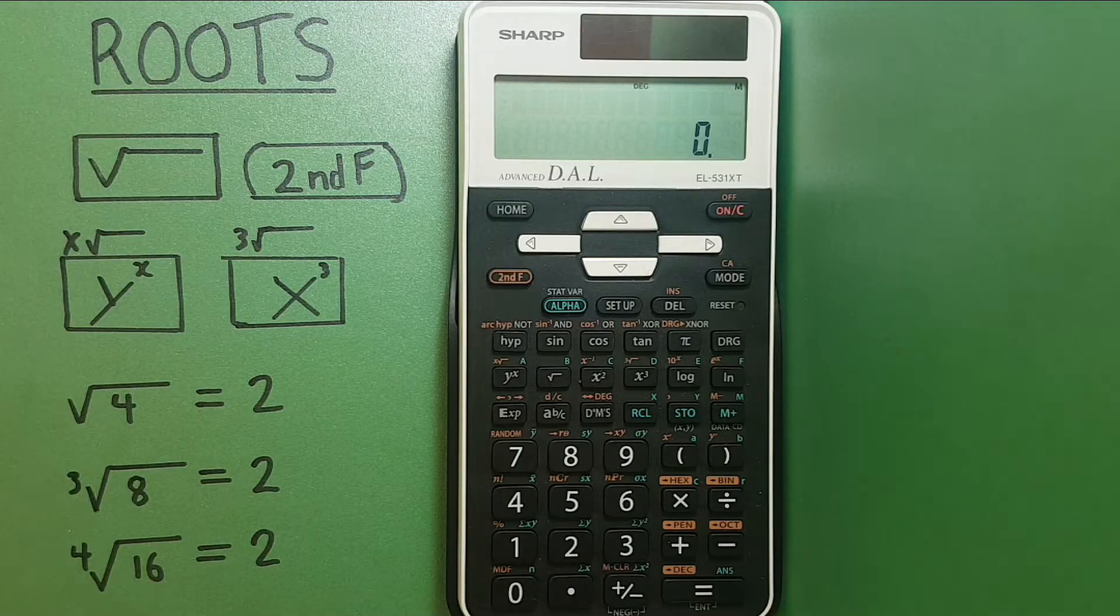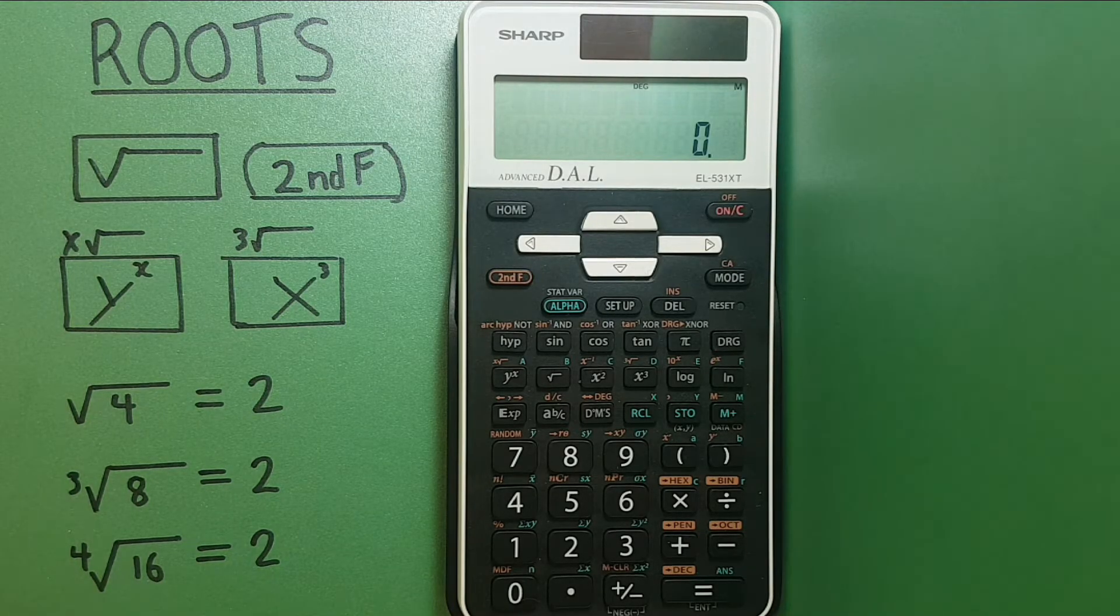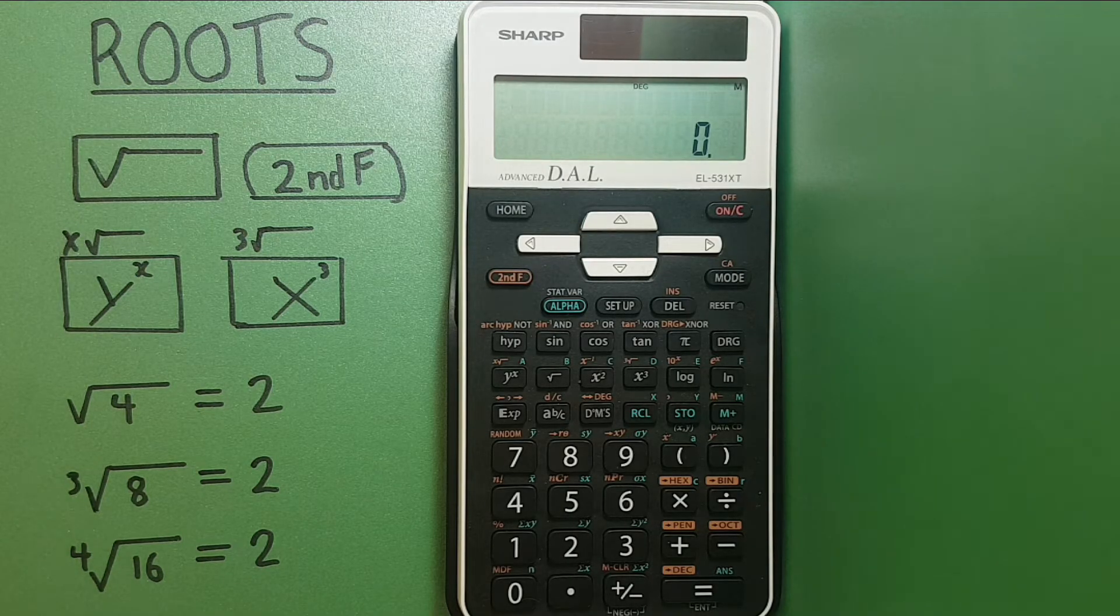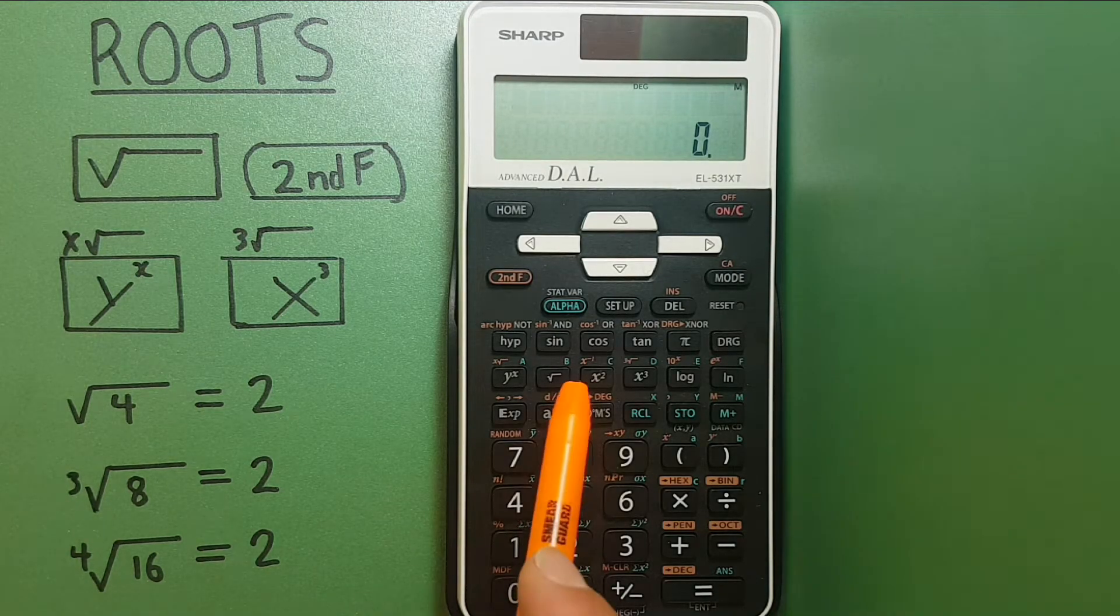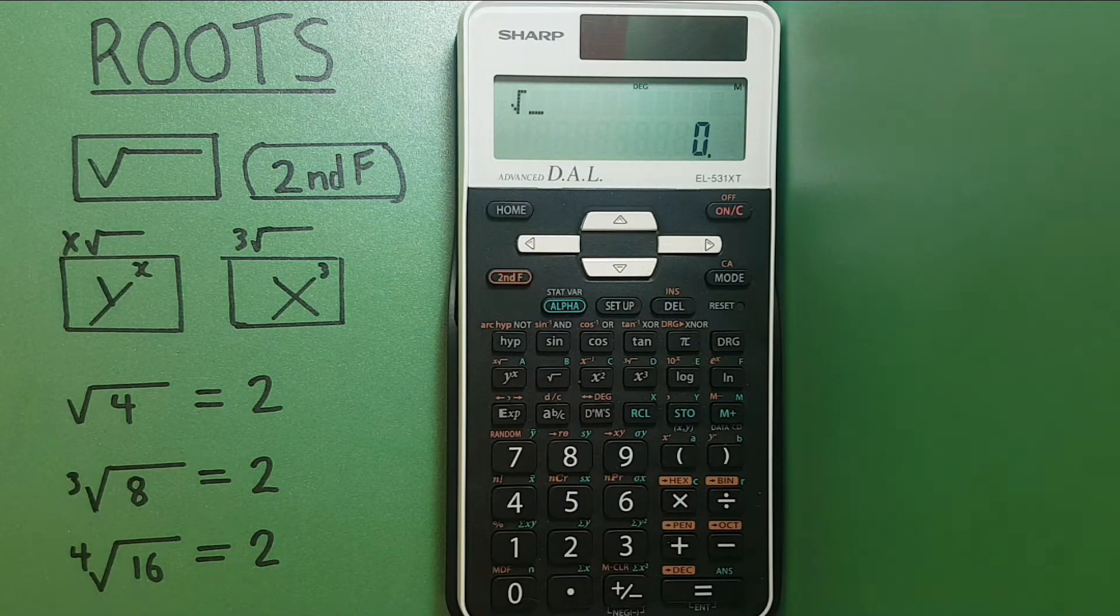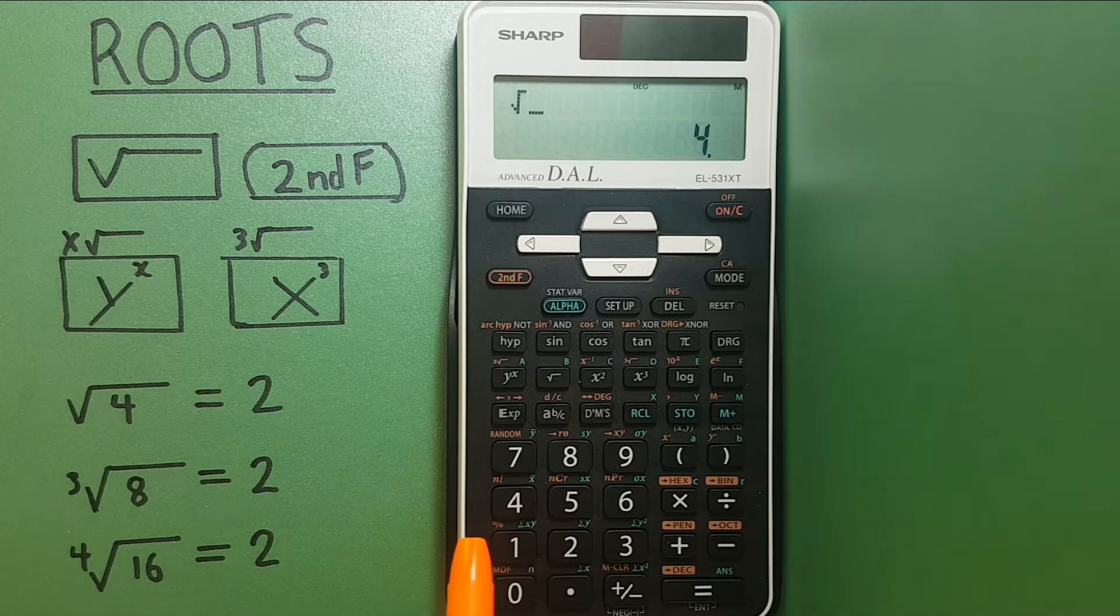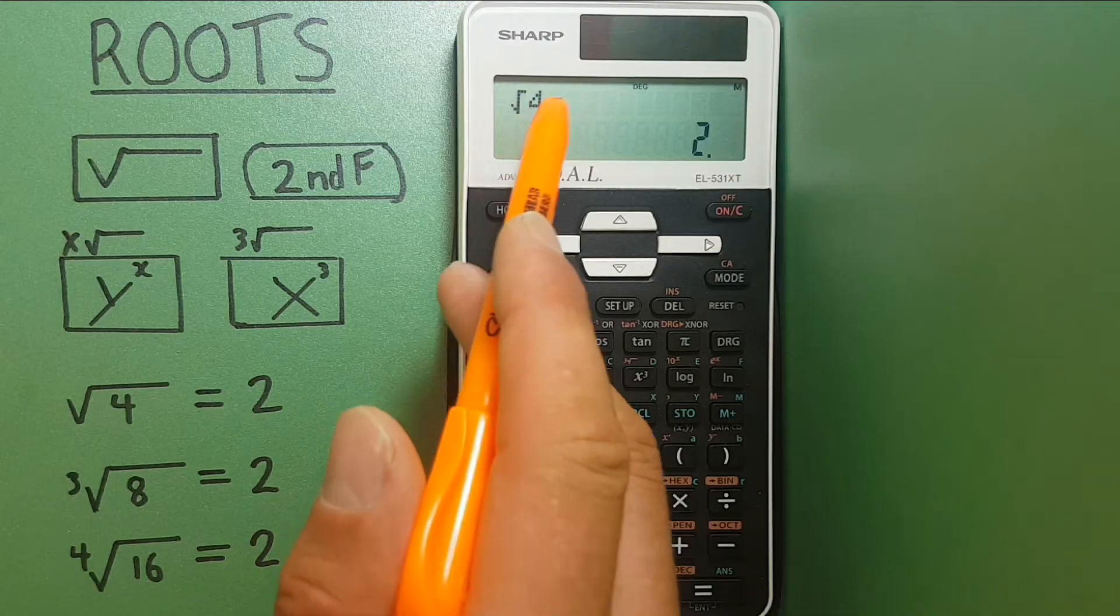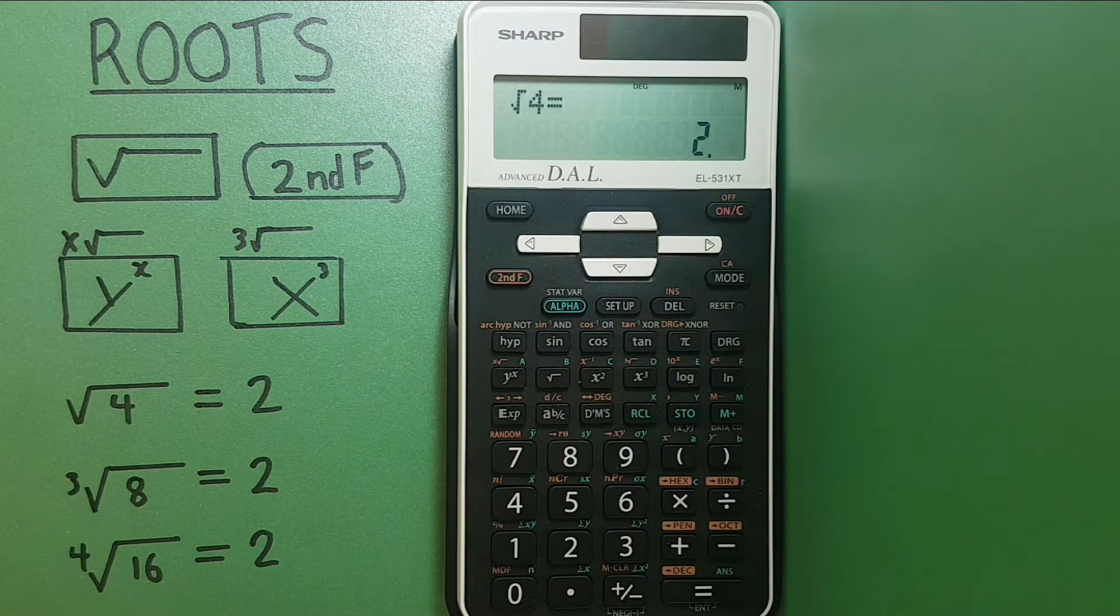To get started we'll look at how to find a basic square root. We know that the square root of 4 should be 2. So to get this we hit the square root key, see the square root pop up there on the top layer, 4 equals. Here we see square root of 4 is equal to 2, which is correct.